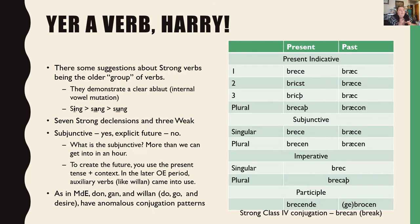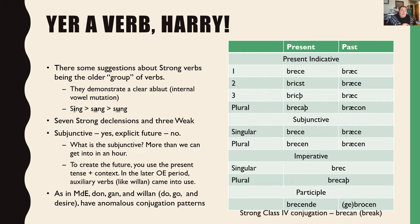I've given you two declension examples — one strong masculine and one weak feminine. The reason I picked weak feminine is that it's one of my favorite examples: in English we say ox and the plural is oxen. The reason the plural of ox is oxen is because ox in Old English was a weak feminine noun, and to this day we still use that declension.